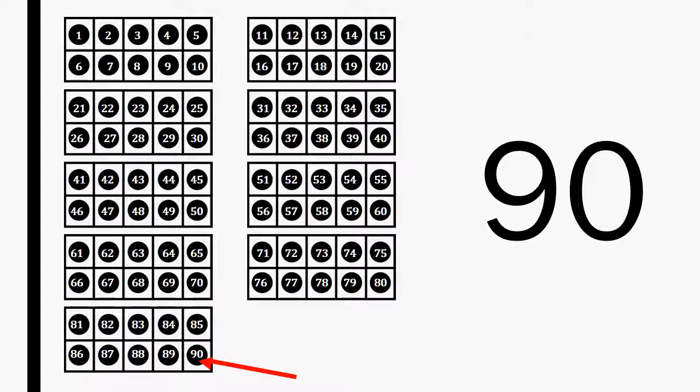These nine 10 frames show the number 90. Please point to the number 90. Now it is your turn to make the number 90 with 10 frames. Nine full 10 frames make the number 90. Use nine 10 frames to make the number 90.